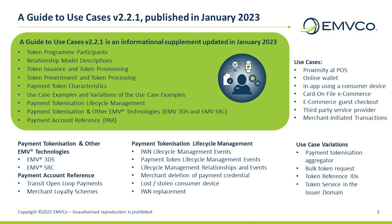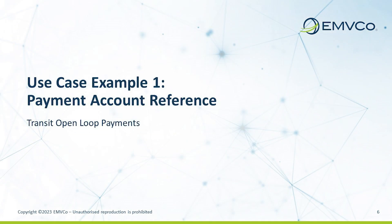We will now look at two of these use cases in further detail: PAR usage within transit systems, and card on file e-commerce. The first use case is payment account reference, usually referred to as PAR — a way to provide a unique reference linking a payment account number (the number on the front of your card) and all of its related tokens. It is never used for transactions, but can be used as a reference in third-party systems for linking activities by multiple tokens of the same PAN, for example merchant loyalty or, in this case, transit open loop travel.